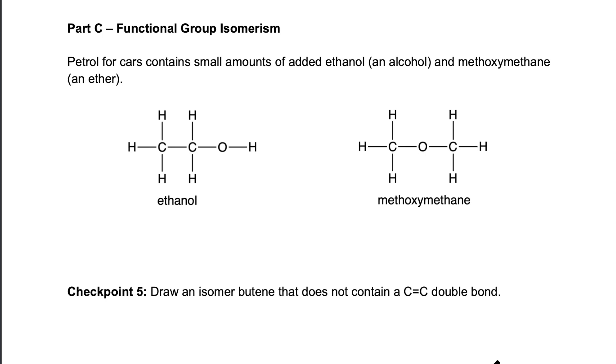The last kind of structural isomerism is functional group isomerism. So here are two molecules. They are added to petrol. They have the molecular formula C2H6O. Their functional groups are different. This kind of isomerism is called functional group isomerism, where you rearrange the molecules to totally change the functional group.